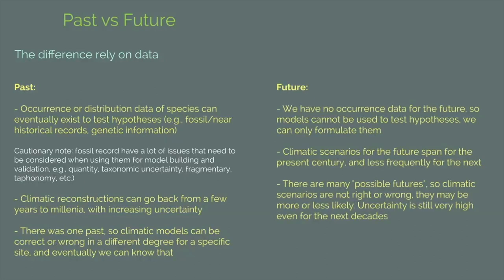Whereas when you model for the future, we don't have occurrence records for the future, of course, so we cannot strictly speaking test hypotheses — we can only formulate hypotheses on how climate can impact species and how species may respond to those climatic changes. For the future, we face different problems because we don't know how the future is going to be. We have many different scenarios or possibilities, and many of them are equally likely, so we have a big deal of uncertainty in future projections, which is something we have to live with and handle.